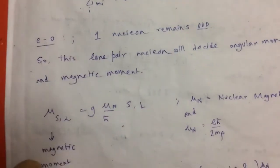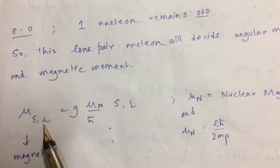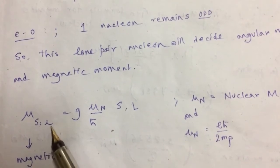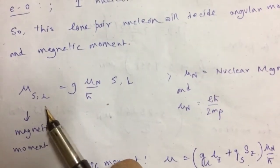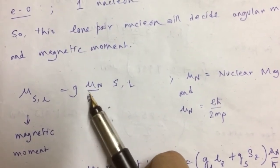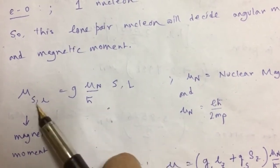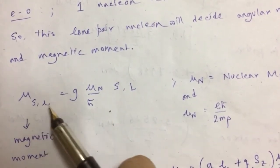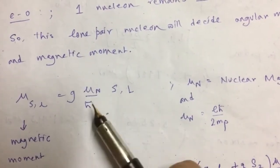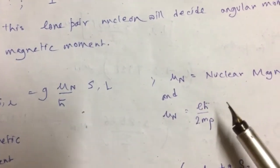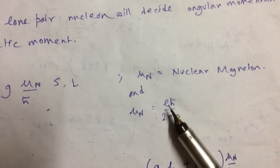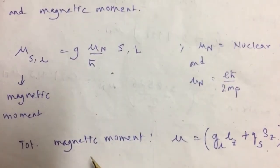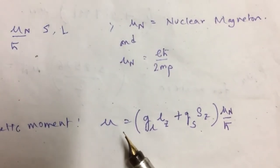In our video on nuclear spin, we learned the formula for the magnetic moment of the nucleus — whether it arises from spin or orbital angular momentum. The magnetic moment is equal to g times mu_n times the angular momentum, where g is the g-factor constant and mu_n is the nuclear magneton. If it is mu_s, the magnetic moment corresponds to spin angular momentum S; if it is mu_l then it is g mu_n L divided by h-bar. The nuclear magneton mu_n was defined as e*h-bar divided by twice the mass of the proton.